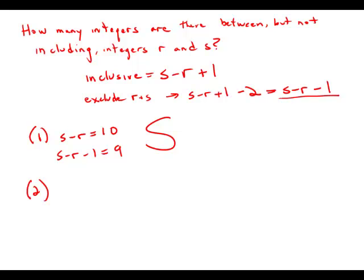Statement number 2 tells us there are 9 integers between, but not including, r plus 1 and s plus 1. Well, let's think about this.